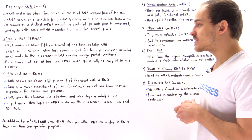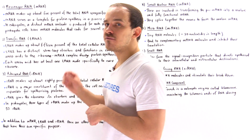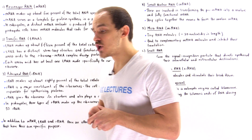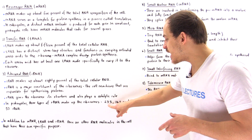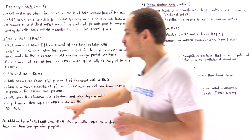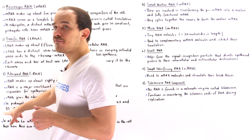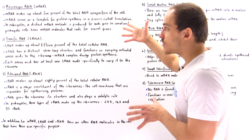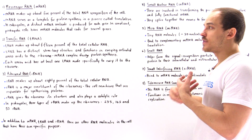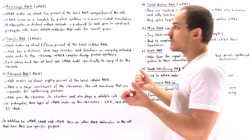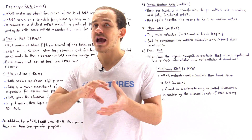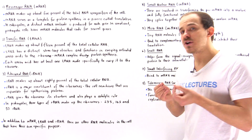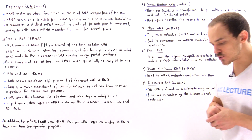In prokaryotic cells, there are three types of rRNA molecule found in the ribosome: the 23S, the 16S, and the 5S. In addition to these three major components of the RNA molecules found inside our body, we have additional RNA molecules that also serve their own unique function and purpose.